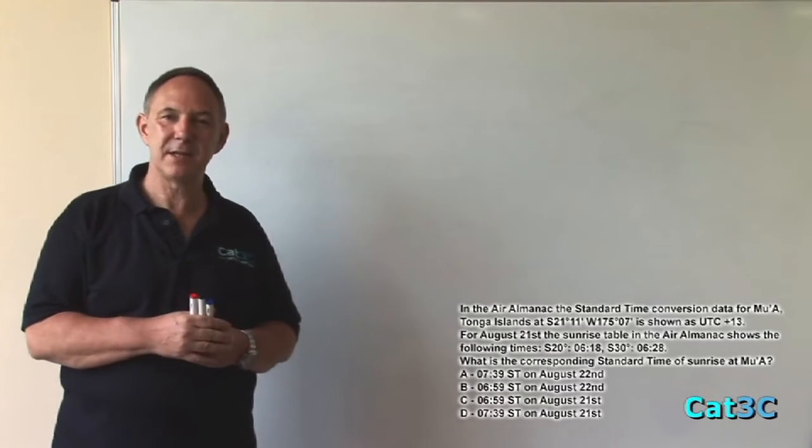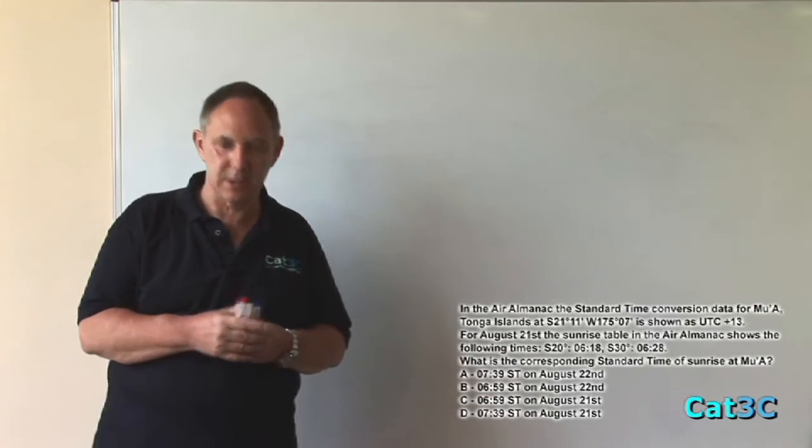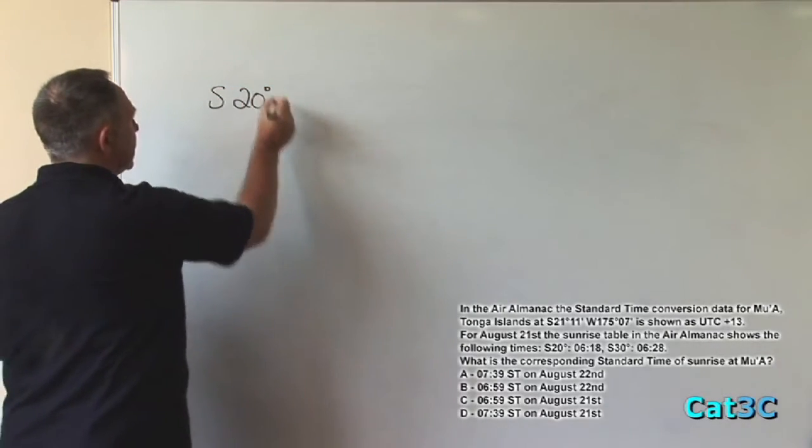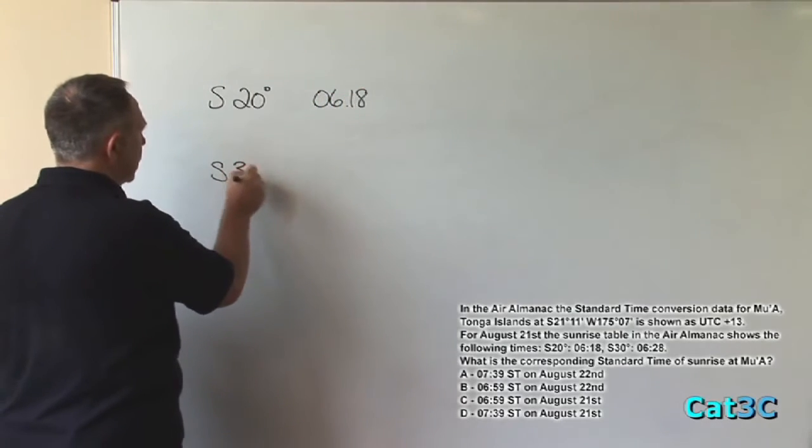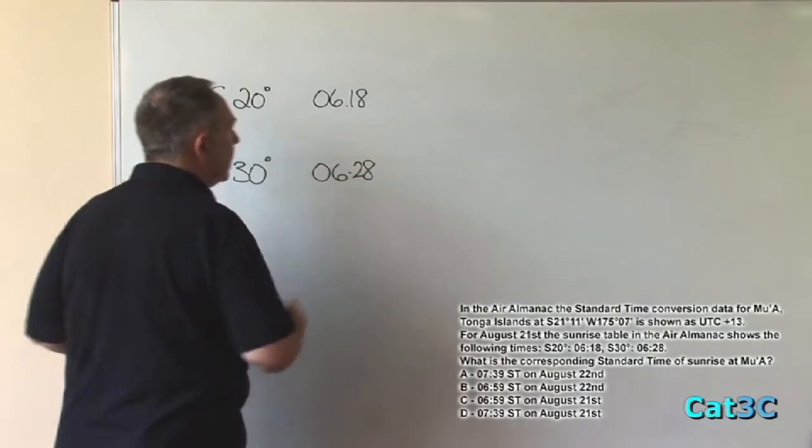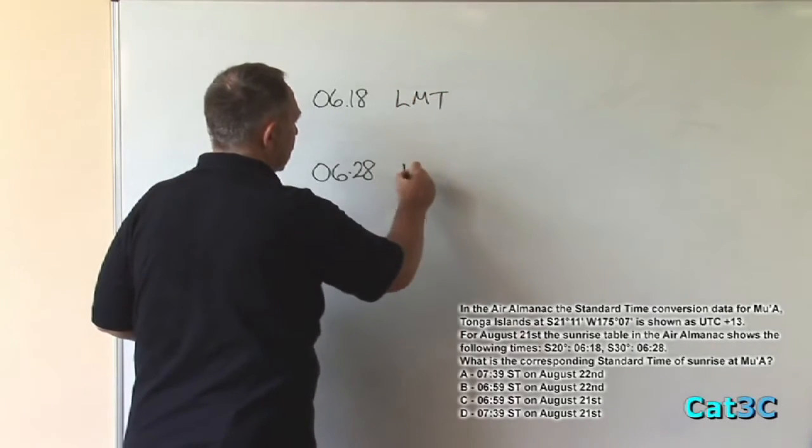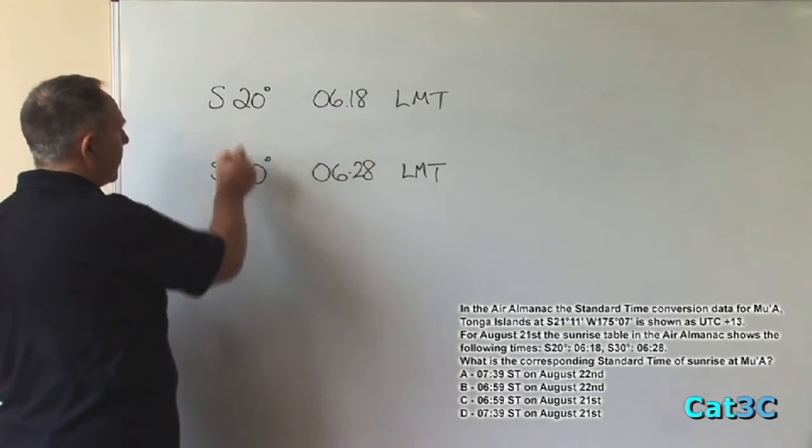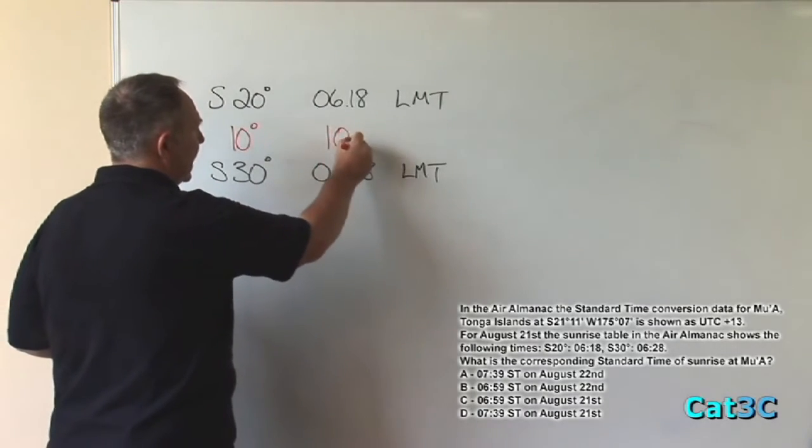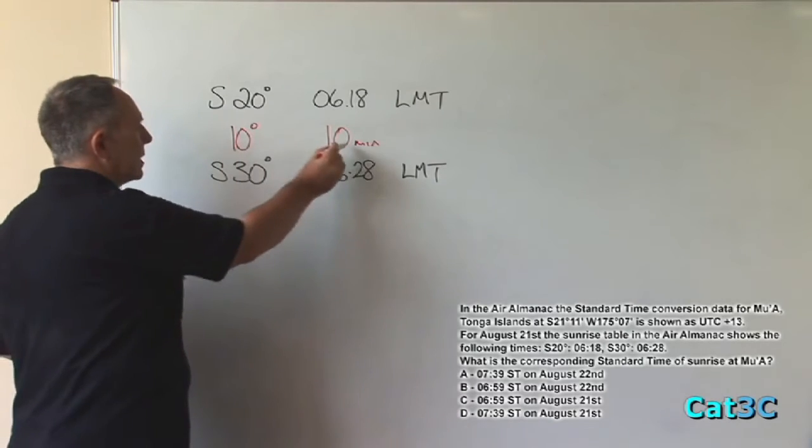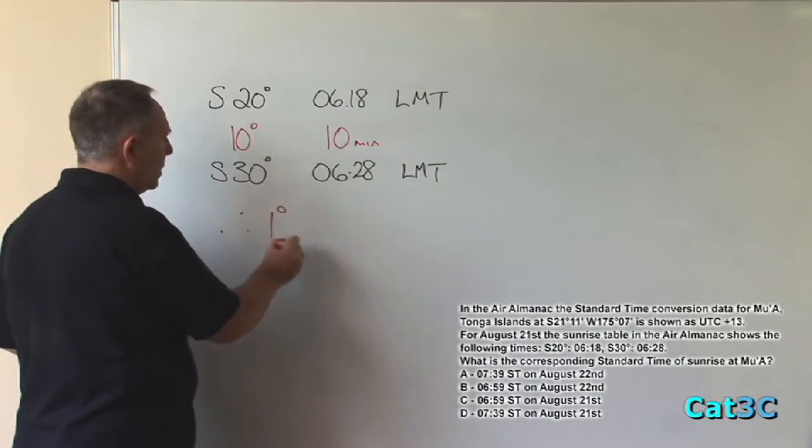This question is asking us for the standard time of sunrise at Mua. In order to calculate the standard time of sunrise, we first need to calculate the UTC time of sunrise. Unfortunately, no time of sunrise is given to us at Mua whatsoever. What we are given are the times of sunrise in the Air Almanac at south 20 and south 30. Remember though that all sunrise and sunset times are given in local mean time. This shows us that for a 10 degree change of latitude, we have a 10 minute change in sunrise time. We can conclude from that that 1 degree is equal to 1 minute.